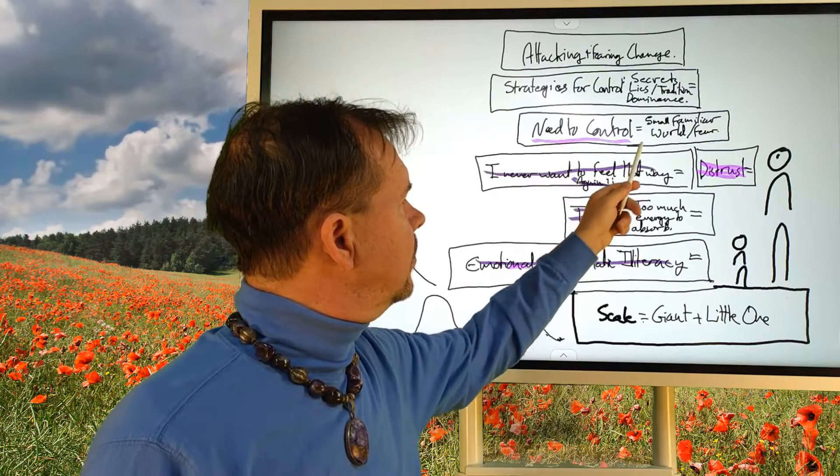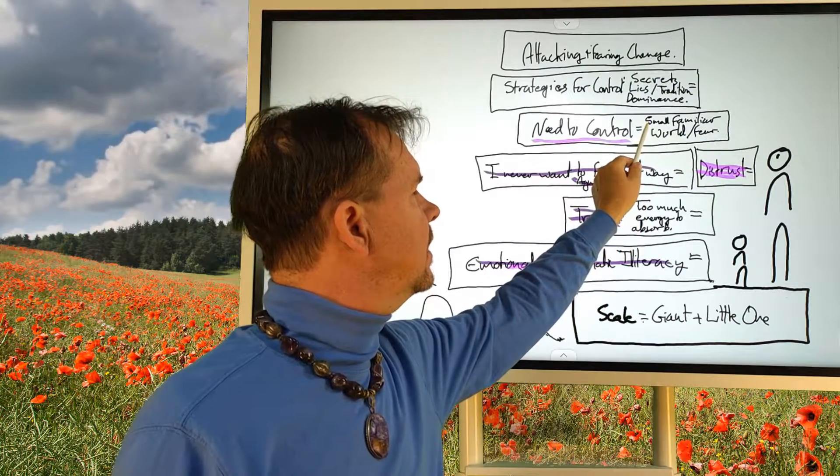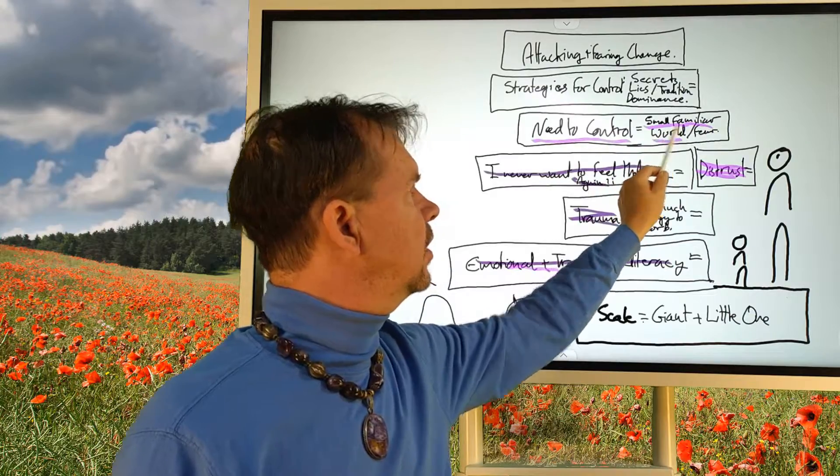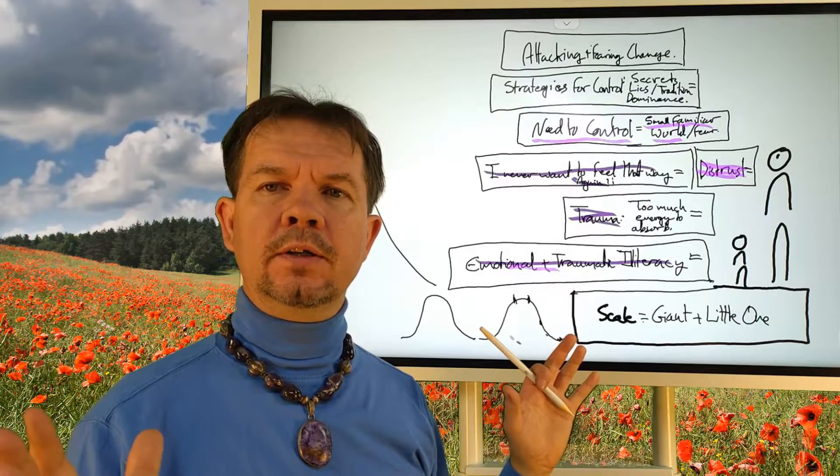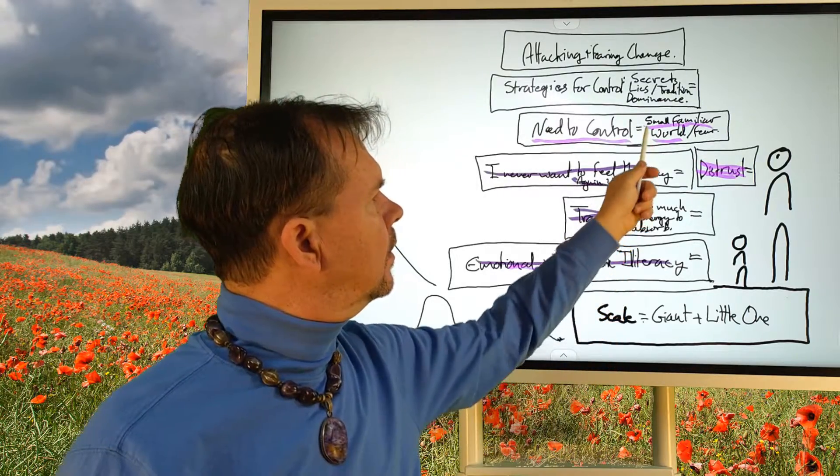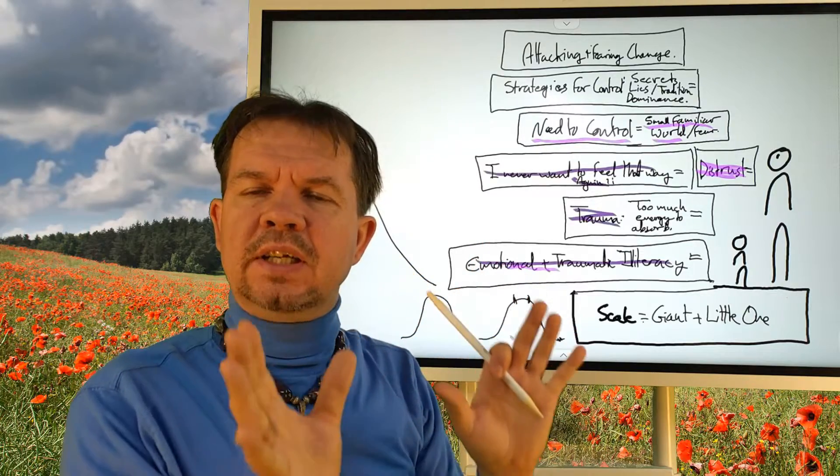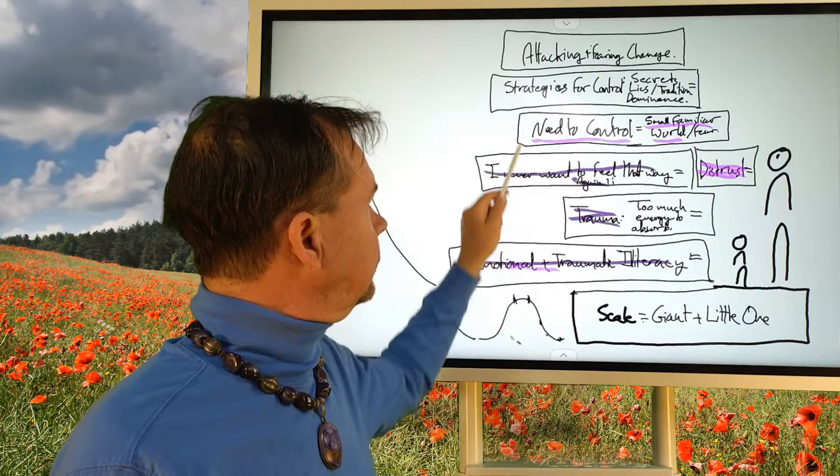And out of that fear, we seek a strategy to be in control. So this pattern of energy is the default pattern of every single person raised in our cult to one degree or another. And one of the most common strategies is to create a small, familiar world inside the big, complex, scary world in which to hide or reside in fear.